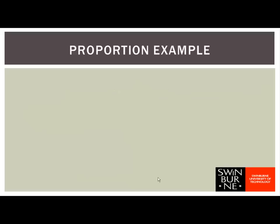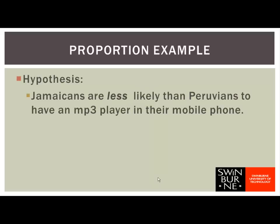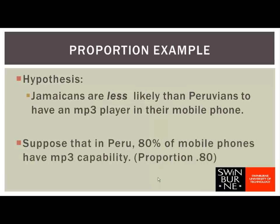The whole idea of sampling theory is that when we look at our sample, it's just one of a whole lot of different samples that we might have got when we took a sample from our population. If we took a whole heap of samples from our population, we wouldn't expect them all to be the same — this difference is called sampling variability. We're going to look at a specific example relating to proportions, starting with the hypothesis that Jamaicans are less likely than Peruvians to have an MP3 player in their mobile phones.